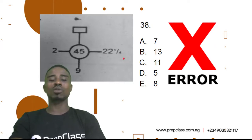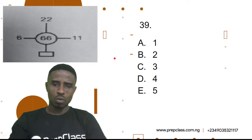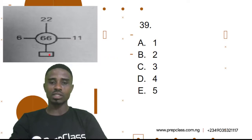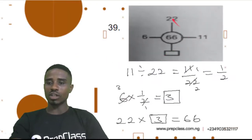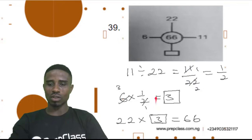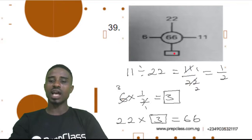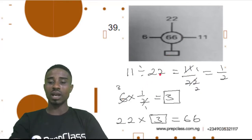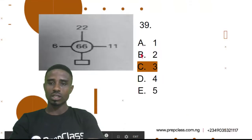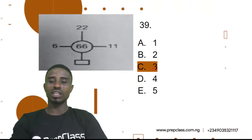Alright, let's move to question 39. We have been asked to fill this empty space. We will say 11 over 22, which gives us 1 over 2. Then 1 over 2 times 6: 6 times 1 over 2 — 2 into 6 is 3 — which gives us 3. Now, 3 times 22 will give us 66. So, our correct answer would be 3. 11 divided by 22 is 1 over 2; 1 over 2 times 6 is 3; and 3 times 22 gives us 66. Question 39, option C — 3 is our correct answer. Let's look at the next question.